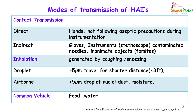Droplet inhalation usually deals with organisms which are more than 2 micrometers in size and travel shorter distances, usually less than 3 feet. Airborne infections are those which are less than 5 microns in size and tend to travel further and remain suspended for longer periods of time. Common vehicle transmission is through food or water.